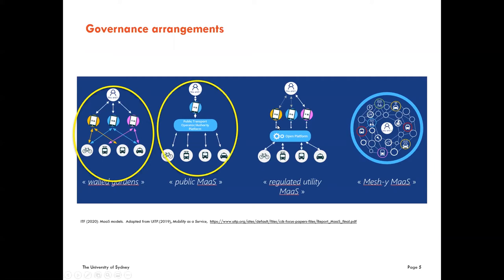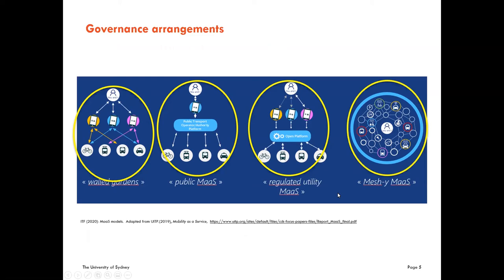In public MAS, the integrator role is either the public authority or the public transport operator. In the regulated utility MAS, there is still a public authority present regulating the platform providers, who in turn provide services to the user. Meshi-MAS is not yet proven in a comprehensive way, although there's been a trial in the Netherlands. If successful, this organisational form would provide advantages — it relies on a blockchain to process the automatic transactions that occur between users and mobility providers, as shown by the links within the circle of the Meshi-MAS governance arrangements.